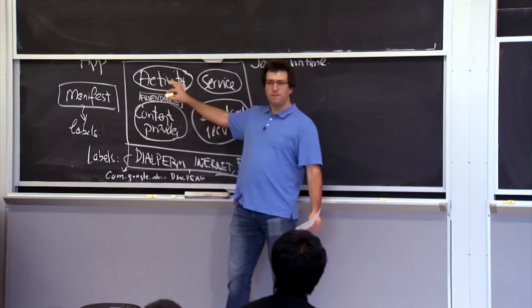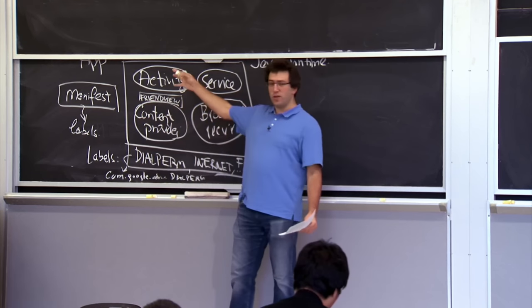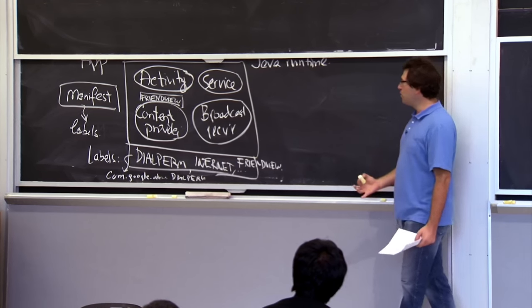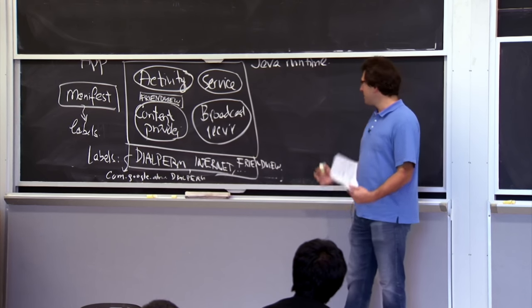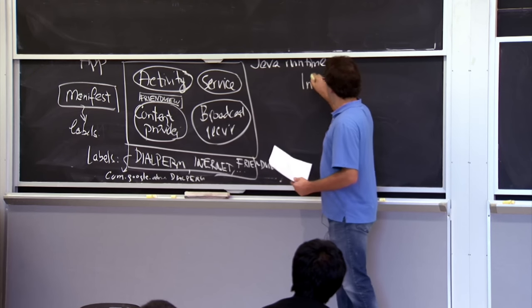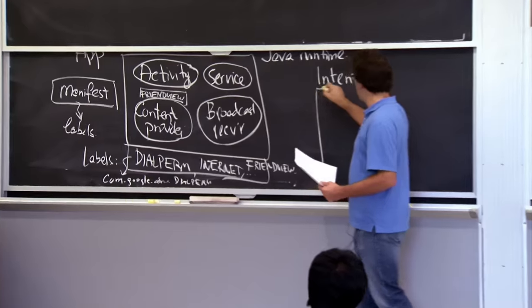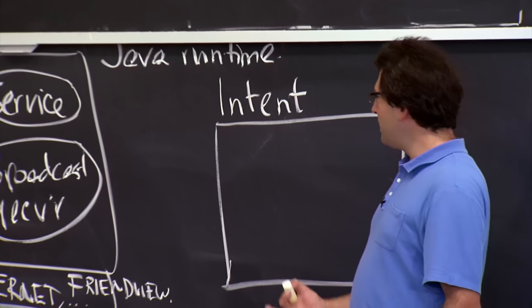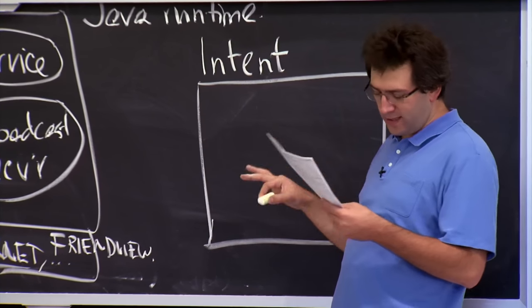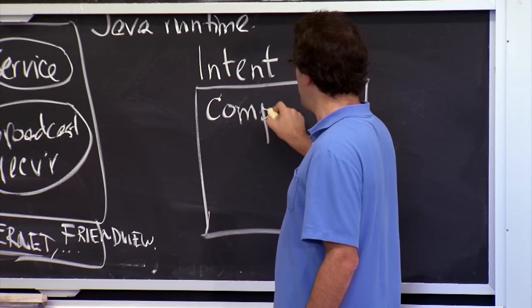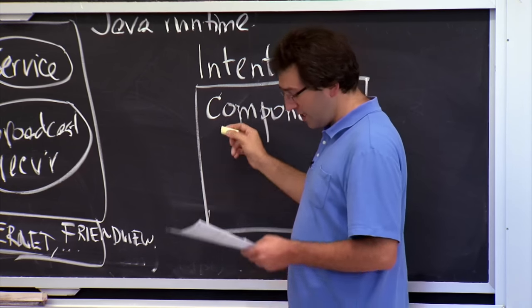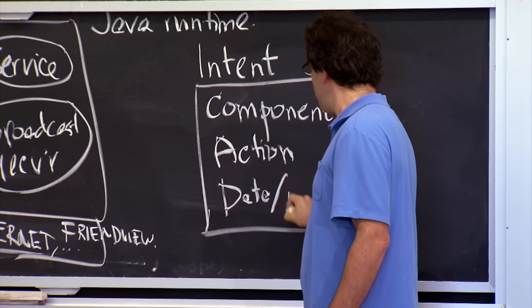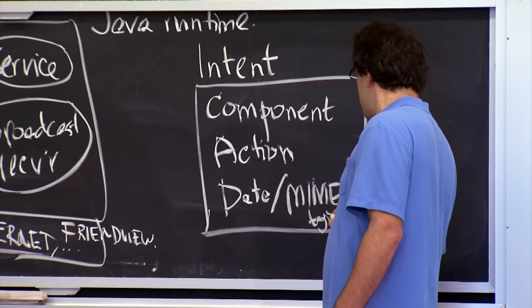To communicate between applications, it's mostly done through what's called an intent — an Android thing introduced by the framework developers. An intent is a structured message with three important things: the name of a component to which you want to send a message, the action that you want the component to take, and the data along with the MIME type that you want to send to the other component.